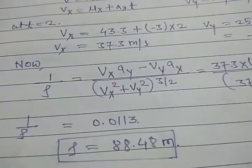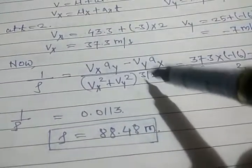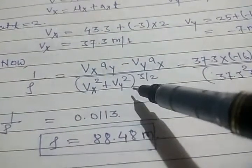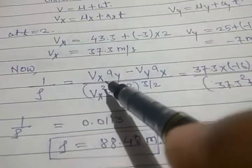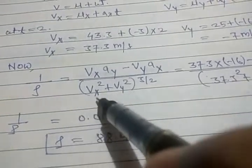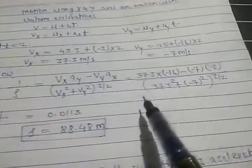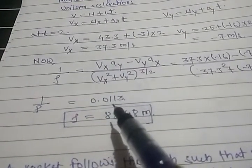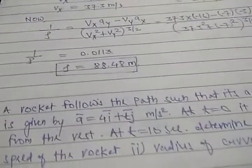Here is one more formula for finding ρ: 1/ρ equals (vx·ay minus vy·ax) divided by (vx² + vy²)^(3/2). Putting in the values vx=37.3, vy=-7, ax=-3, ay=-16, we get 1/ρ equals 0.0113, so ρ equals 88.48 meters.